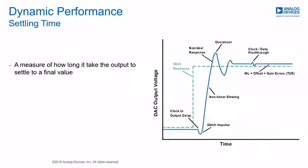Settling time is the measure of how long it takes for the output to settle to ±0.5 LSBs of the final value from when it was programmed to update. This can be from the last clock edge or the rising edge of a chip select, for example. The output final settled value will be within the TUE specs for the part. The plot shows the ideal zero-order hold step response of the DAC output with the green dashed line and a more typical output demonstrating some of the errors with the blue line.